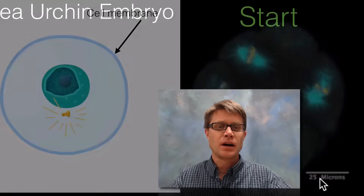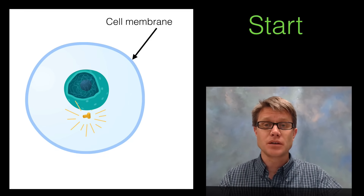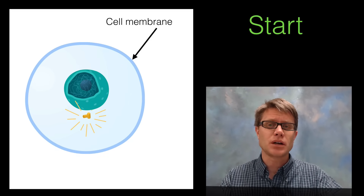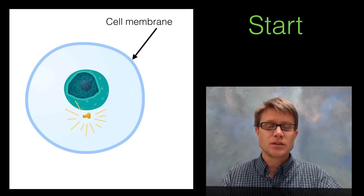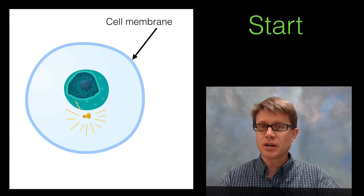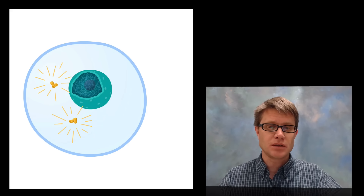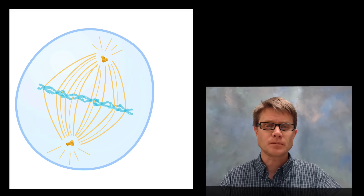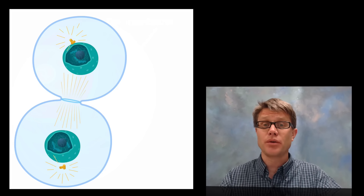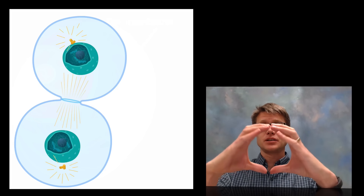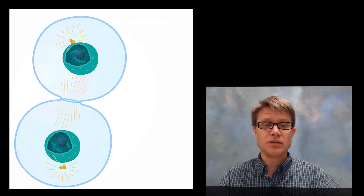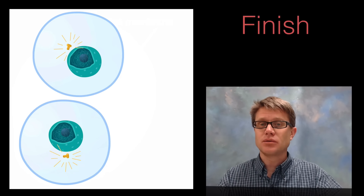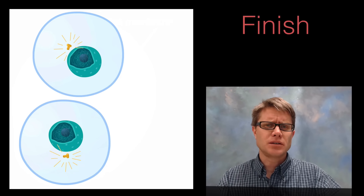We're going to go through all the steps of mitosis like a movie, concentrating on four different structures. Let's start with the cell membrane. Watch what happens to the cell membrane over different phases — nothing really changes for a while, and then boom, the whole thing divides in half. The cell gets larger and then forms what's called a cleavage furrow in the middle, and now we have two cells.